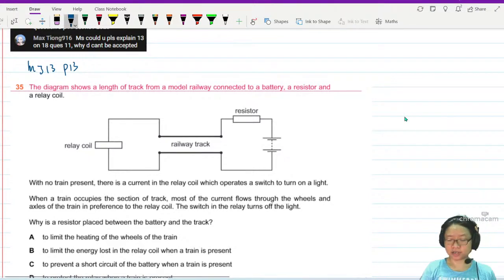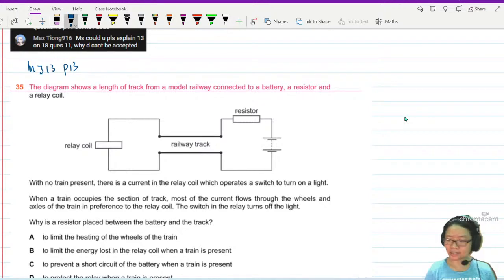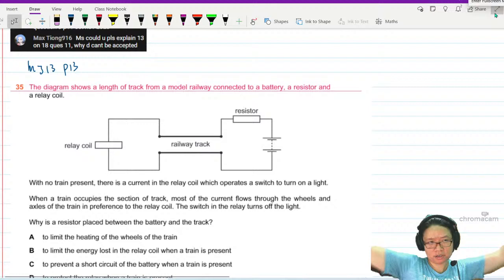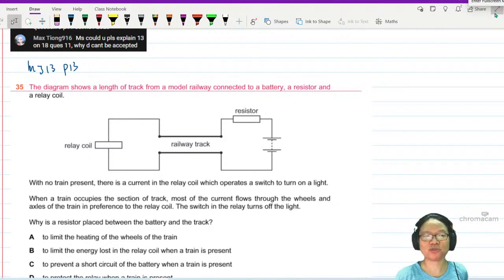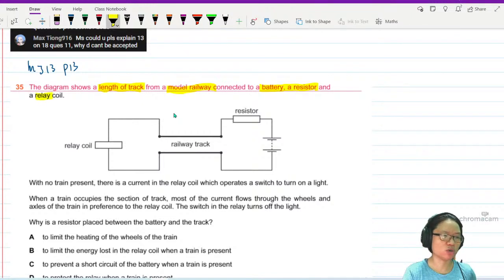This is a circuit question and the purpose of this question is to troubleshoot the circuit. Imagine you are called to the LRT and a collision happened, like what happened in Malaysia recently. You are supposed to check if the relay coil works. This is the length of track - a model length of track of a model railway connected to a battery, a resistor, and a relay coil.